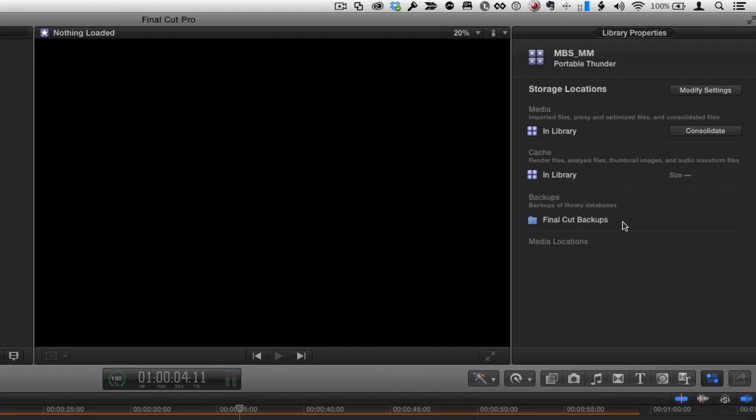And then finally, where your backups are stored, which by default is this Final Cut backups folder in your movies folder on a local drive. If you move the cursor over each of these, it'll tell you the exact path of the library. Here it's showing the path of this library. So you see the MMFCP Bundle, the path of the actual library. And down here is media locations, but we don't have any media yet. There's nothing in here yet.